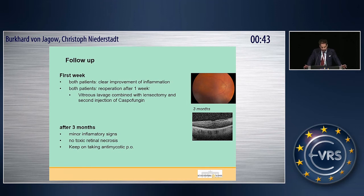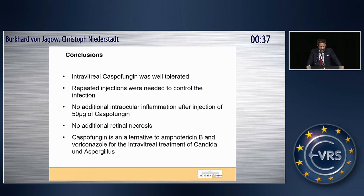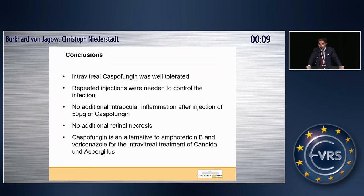Both patients continued taking their oral antimycotic. In summary, intravitreal caspofungin was tolerated very well in both cases, but repeated injections were needed to control the infection. There were no additional intraocular inflammation or retinal necrosis after the injection of 50 micrograms. Therefore, I think caspofungin is a very good alternative to amphotericin B and voriconazole for the intravitreal treatment of Candida and Aspergillus.